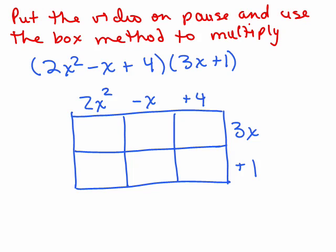Put the video on pause and use the box method to multiply 2x squared minus x plus 4 times 3x plus 1. In this problem there are three terms in one parenthesis and two terms in the other, so you're going to have a box with three terms across the top and two along the side. Go ahead, pause, fill in your numbers, add like terms, and write your final answer.